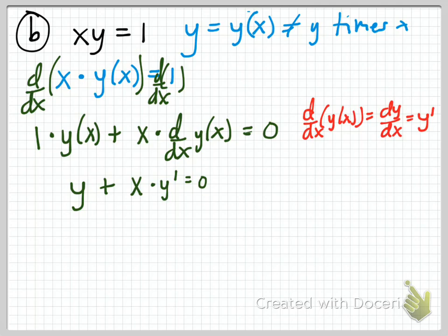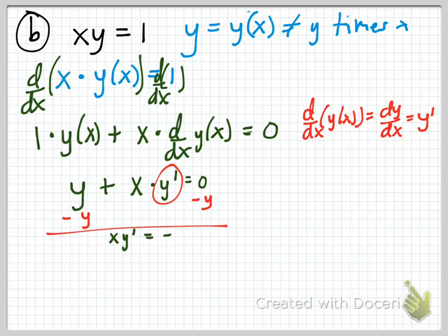We were after the derivative y prime, and notice that there is now a y prime in the equation. So to get the derivative, all we need to do is solve the equation for y prime. We subtract y from both sides to get x times y prime equals negative y, and then dividing both sides by x (noting x can't be zero), we get y prime equals negative y over x.